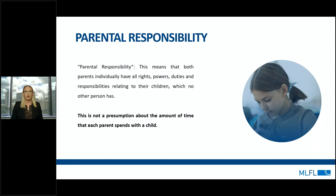If the presumption of equal shared parental responsibility applies, then both parents are required to jointly make decisions about major long-term issues, including schooling, religion, a child's health, a child's name, and changes to a child's living arrangements that make it significantly more difficult for the child to spend time with a parent — for example, moving a child interstate or overseas permanently. It is important to remember that neither parent has more power than the other parent in relation to making long-term decisions. Unless the court takes away equal shared parental responsibility from a parent, both parents continue to have an independent and equal say in major long-term decisions concerning their child's welfare.